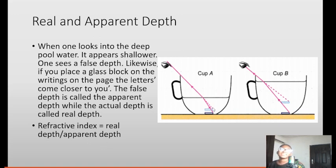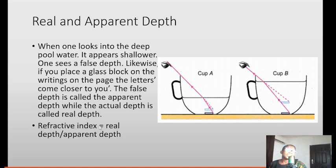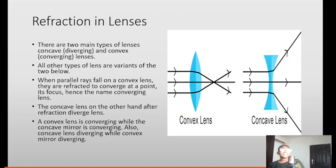The actual depth is called the real depth. So the refractive index equals real depth divided by apparent depth. This is caused by refraction — the light ray travels from water to air, moving from one medium to another, and since it's traveling from a less dense to a denser medium, it bends. So the object appears closer than it actually is.